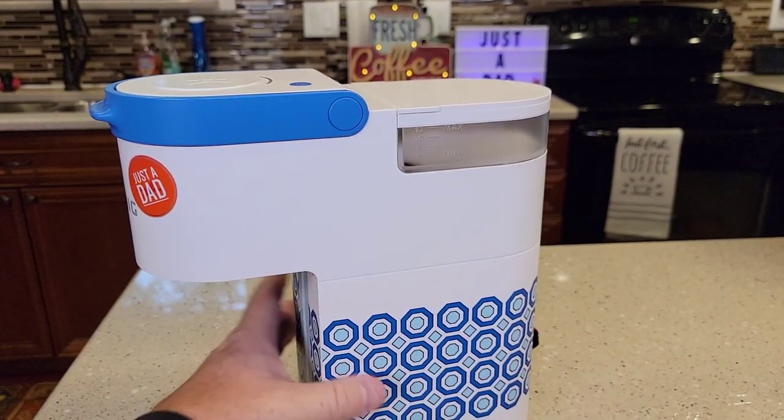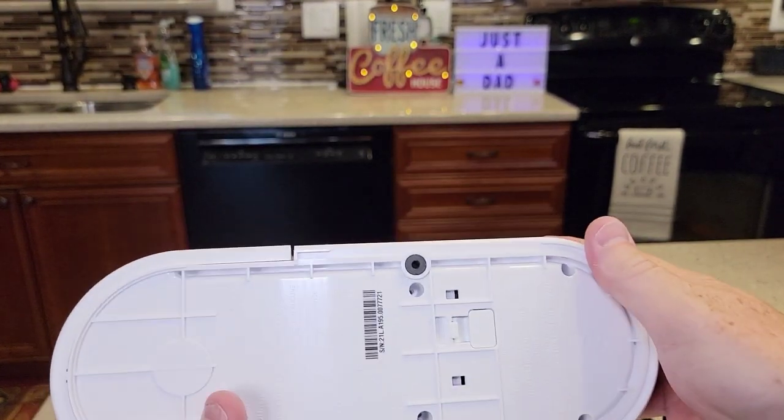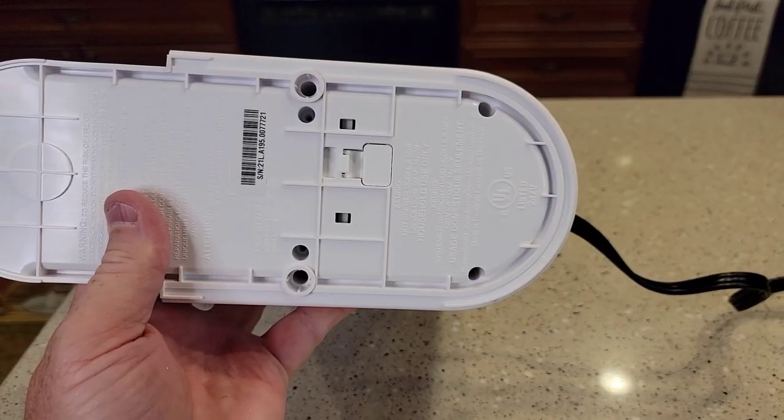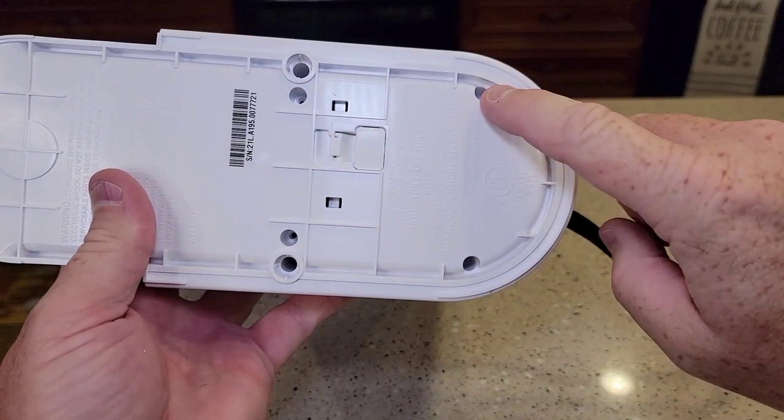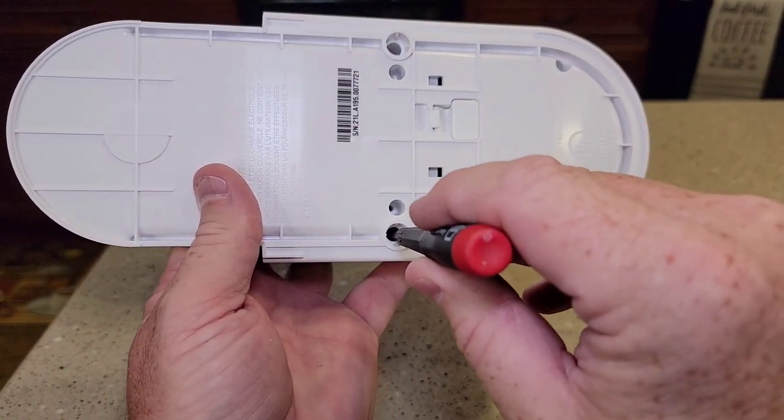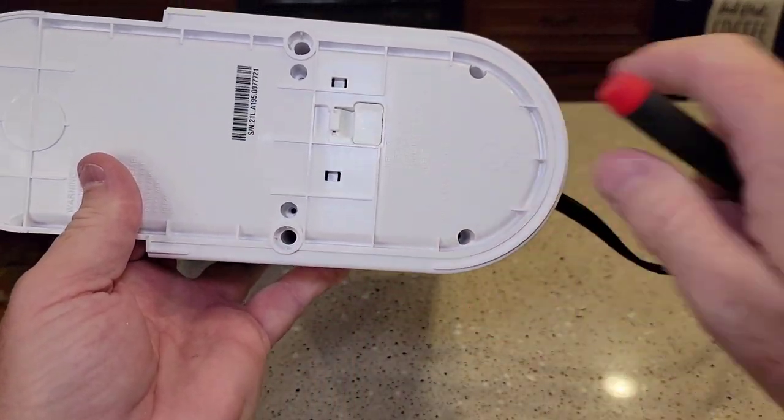So we're going to make sure it's unplugged. I'm going to come down here. We've got some screws to take out. We've got one here and here. So there's only two screws on the bottom right here. These two, down this long shaft, there's not screws. There's not screws there. So just these two screws here.